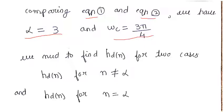Now, we need to find HD of N for two cases. That is, we need to find HD of N for N not equals alpha, and we also need to find HD of N for the case where N equals alpha.